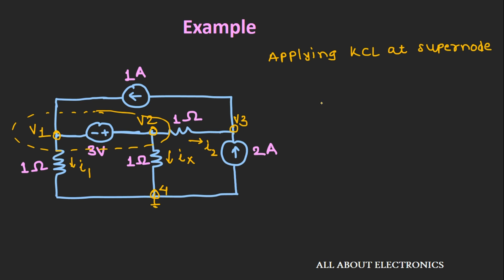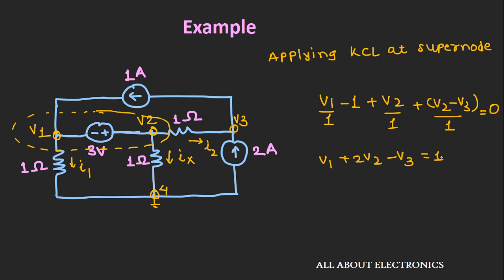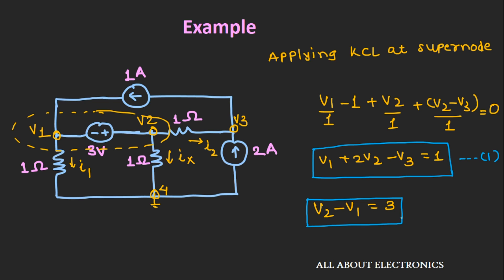Applying KCL at the supernode, we can write V1 by 1 minus 1A plus V2 by 1 plus (V2 minus V3) by 1 equals 0. Simplifying, we get V1 plus 2V2 minus V3 is equal to 1 — equation number 1. The potential difference between node 1 and 2 is 3V, so we write V2 minus V1 is equal to 3 — equation number 2.